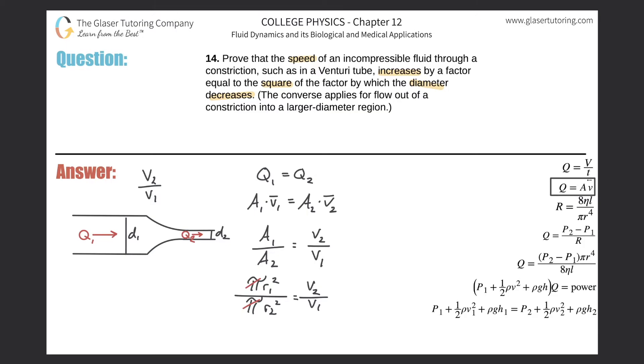So now what we have to do is substitute in diameter for radius. So now how do we do that? Well, remember that the radius, you take 2, multiply it by the radius to get D.